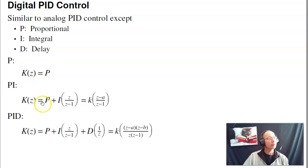The terms would just be the P and integral. The integral is z over z minus one, Laplace transform of an integral. And delay is just one over z. So you want to add three terms together, a proportional term, integral, and delay. And in this lecture we'll look at three different controllers: the P, PI, and PID.